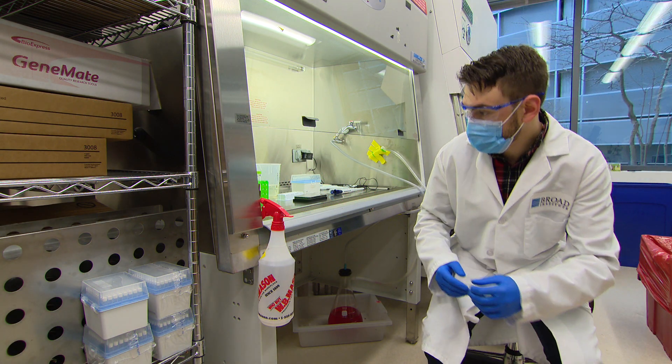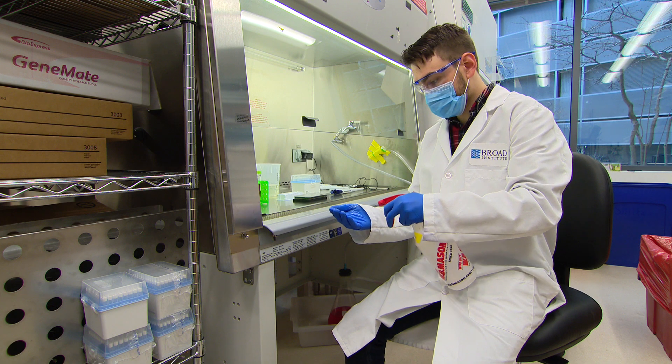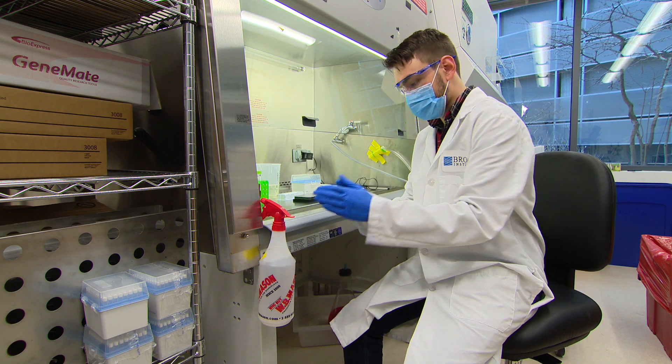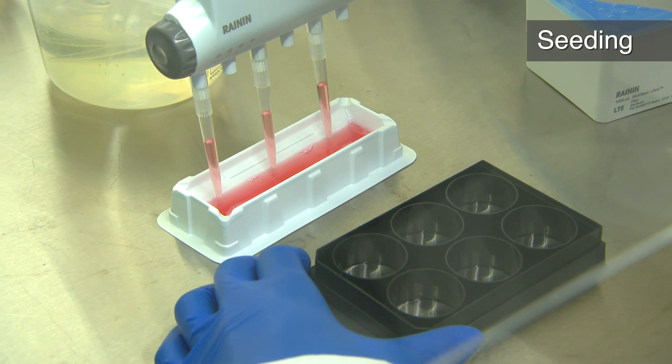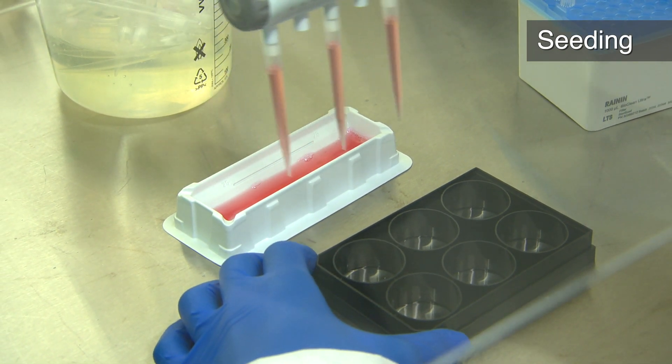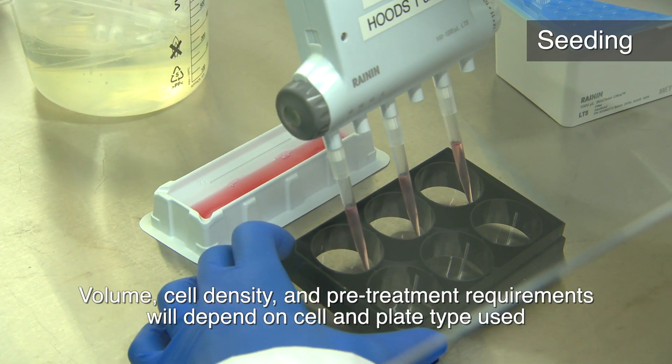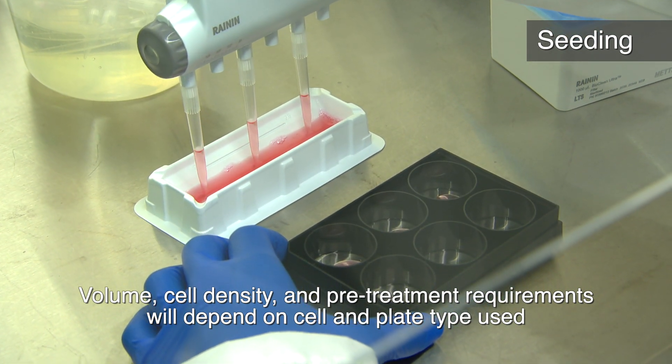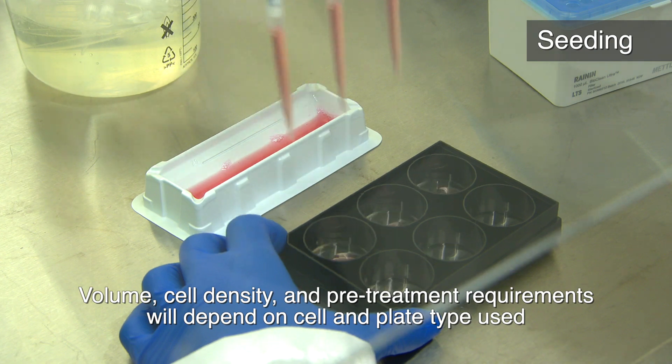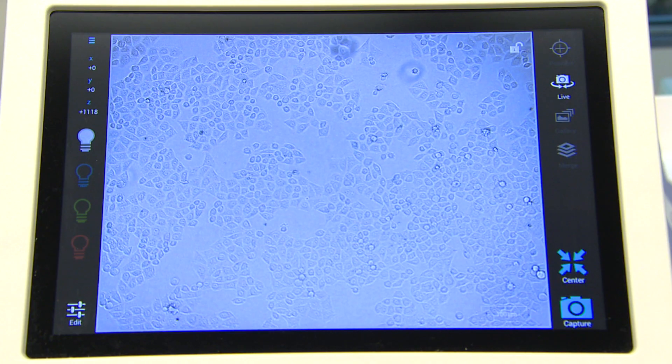Now, we will demonstrate the optical pooled screening workflow using a P65 localization assay in a 6-well plate of HeLa cells. First, seed 400,000 cells per well in 2 milliliters of media and incubate at 37C to yield approximately 80-90% confluency 48 hours later. This brightfield image shows how the cells should look when ready.